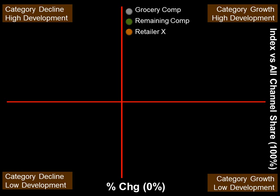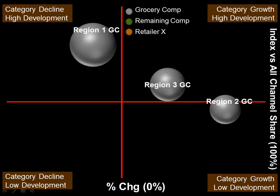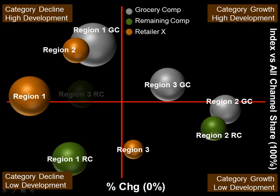From here I can add in their grocery regional competition, the remaining channel competition, and of course their results. Now I can see how retailer X, who is depicted in gold, is doing versus the grocery channel in grey, and the remaining channels in green, across the key three regions.